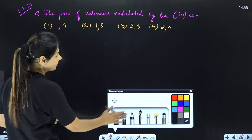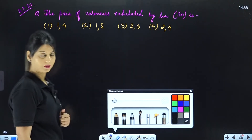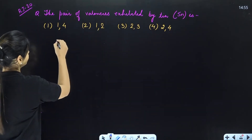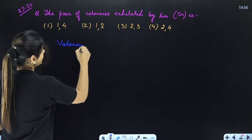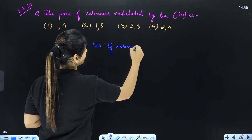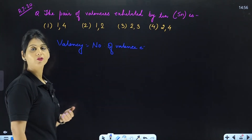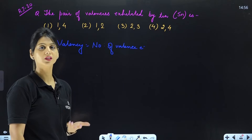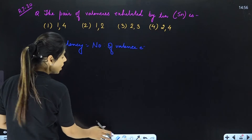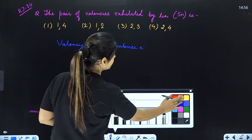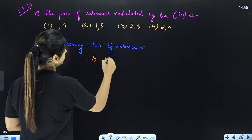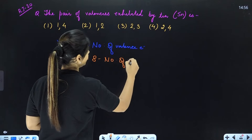How do we determine the number of valence electrons? The formula for valency is: valency equals the number of valence electrons if the valence electrons are from 1 to 4. If the valence electrons equal 4, then valency becomes 8 minus the number of valence electrons.